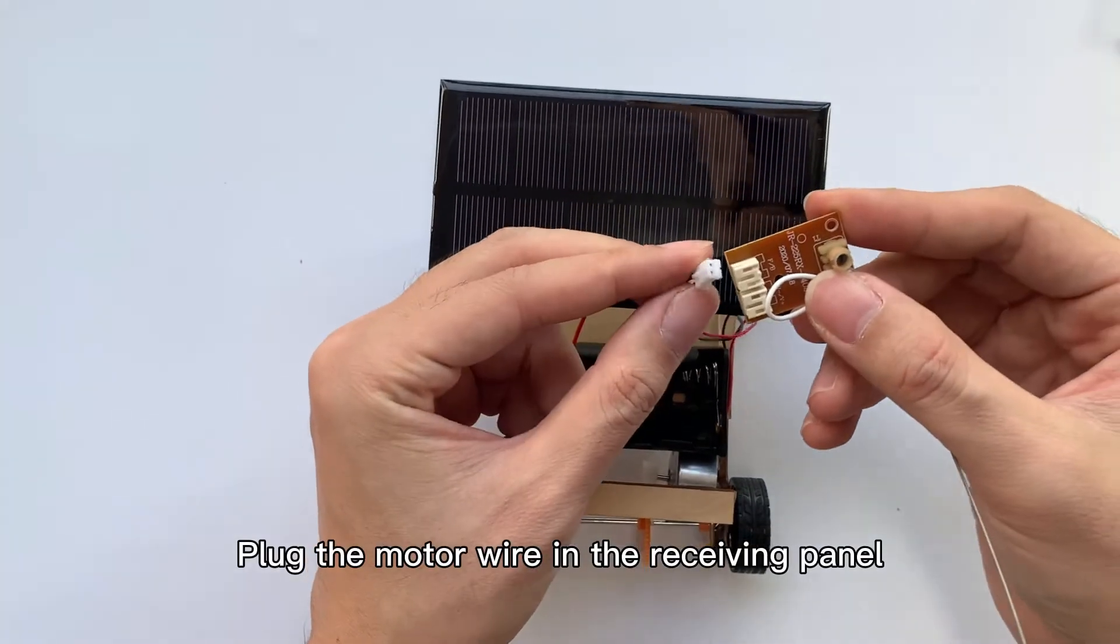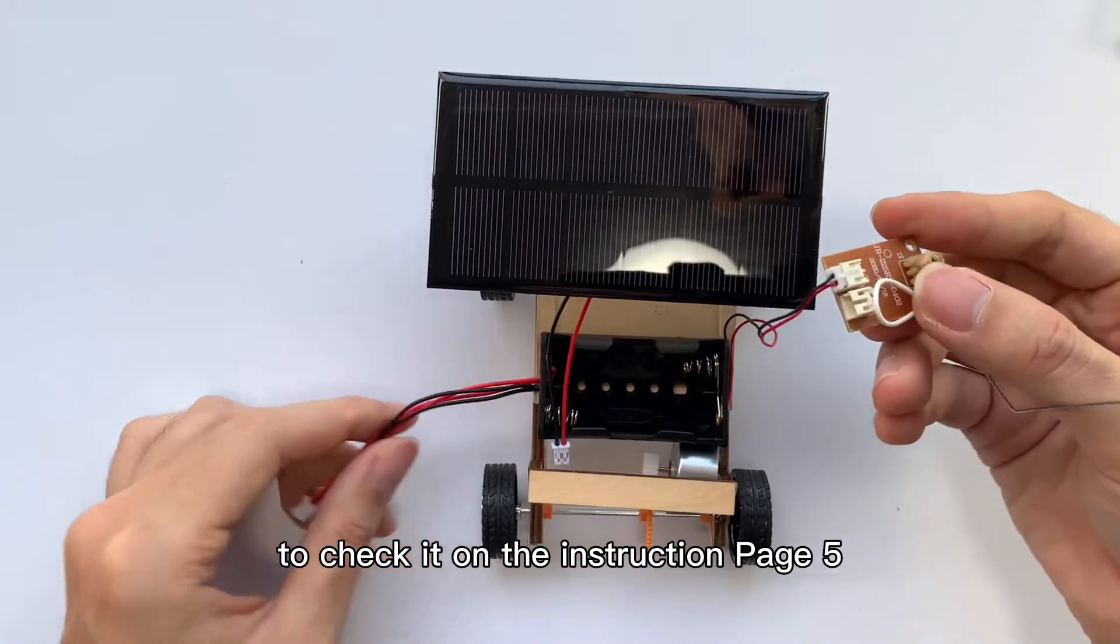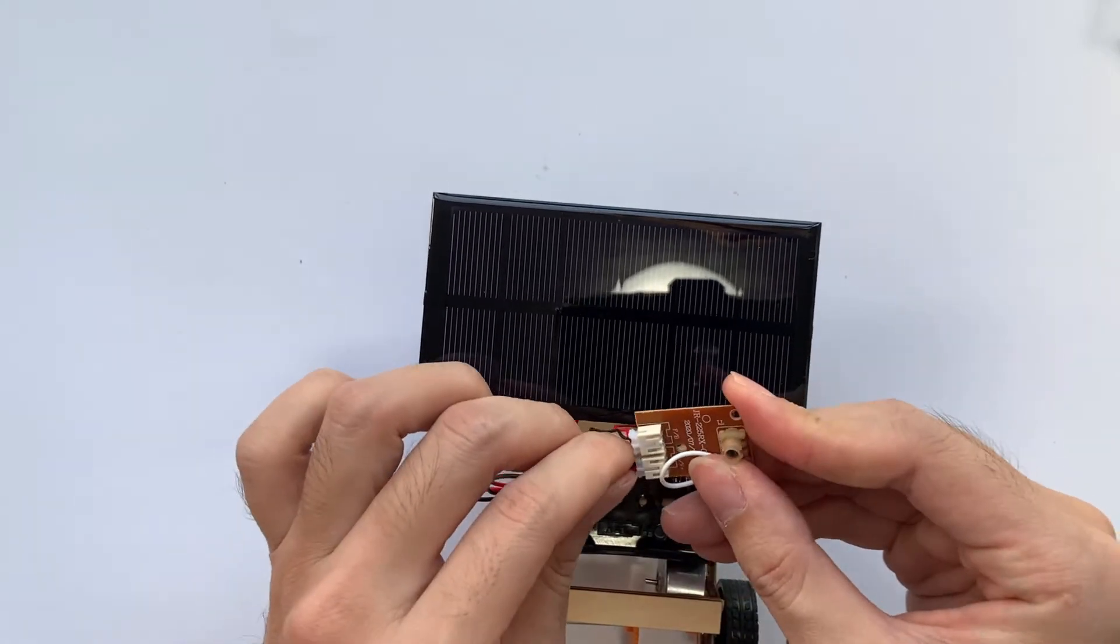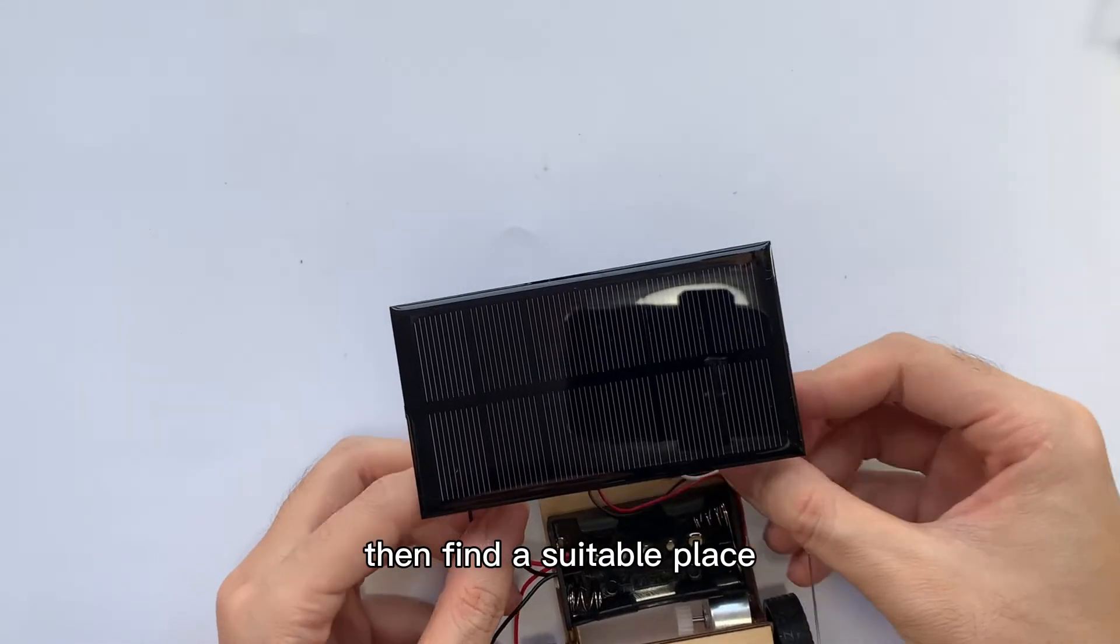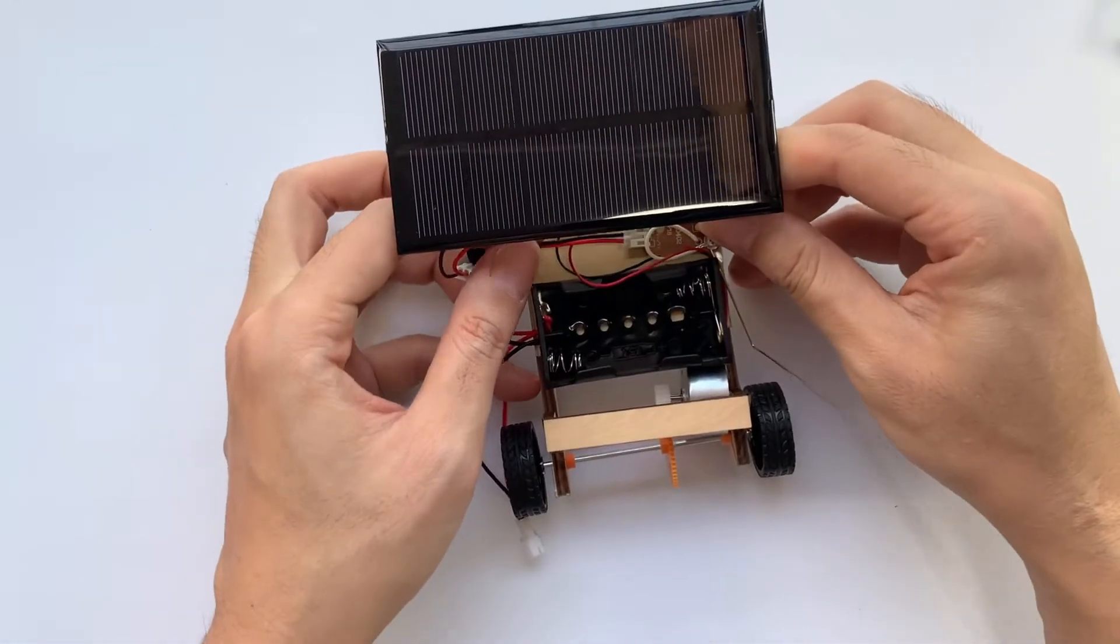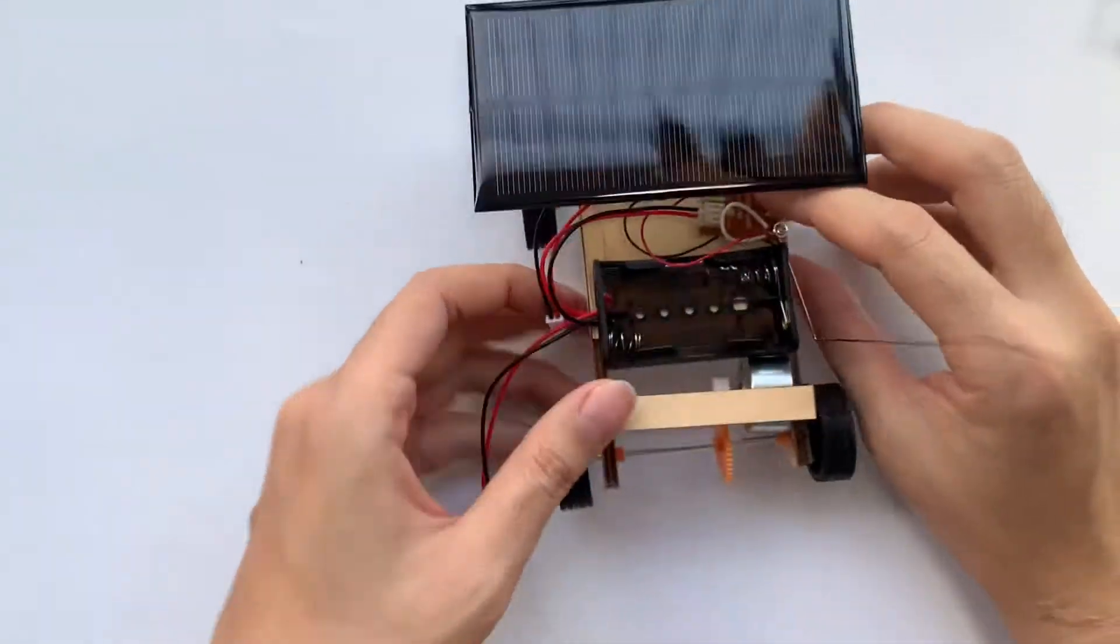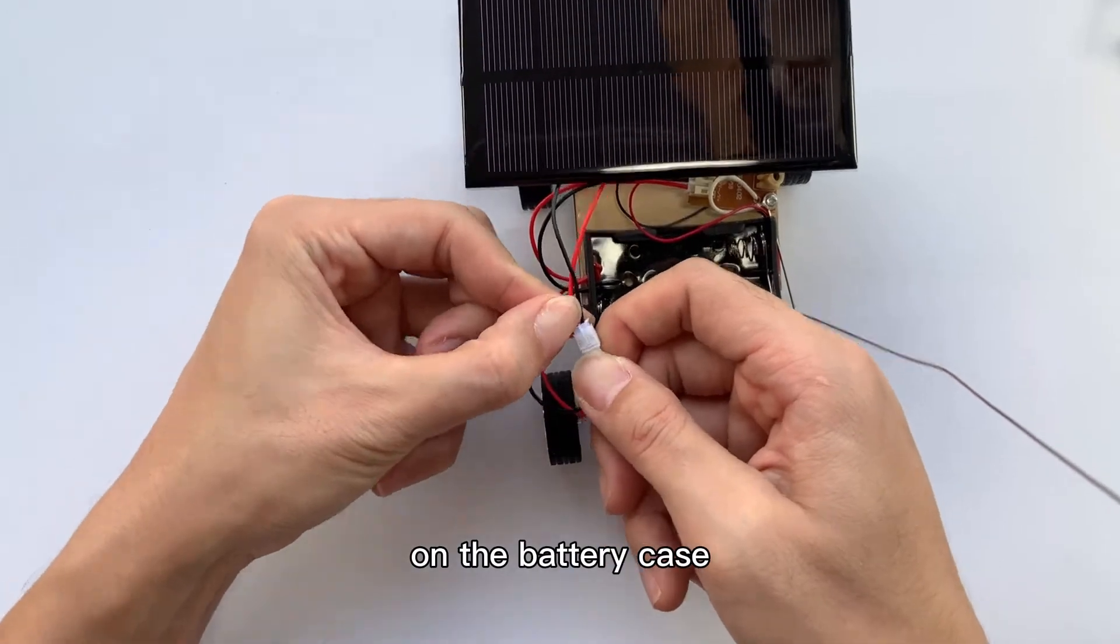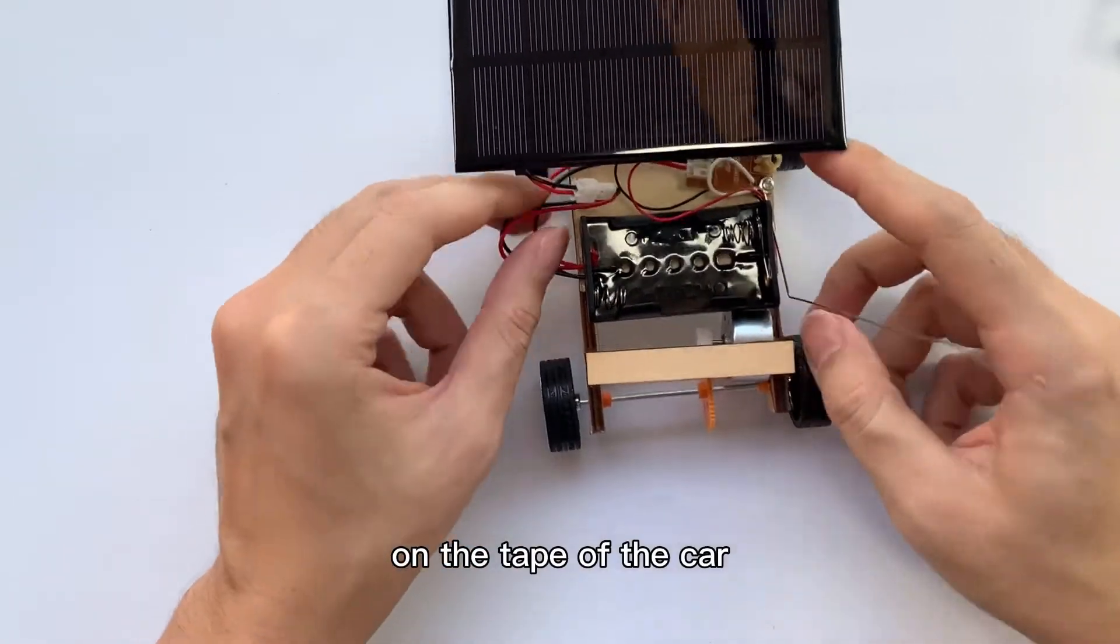Plug the motor wire in the receiving panel. Note the marking of the socket; check it on the instruction page 5. And then plug the battery case into the next socket. Then find a suitable place with tape and stick it on the car. And plug the wire of the solar panel in the socket on the battery case. Organize the wires by sticking them on the tape of the car.